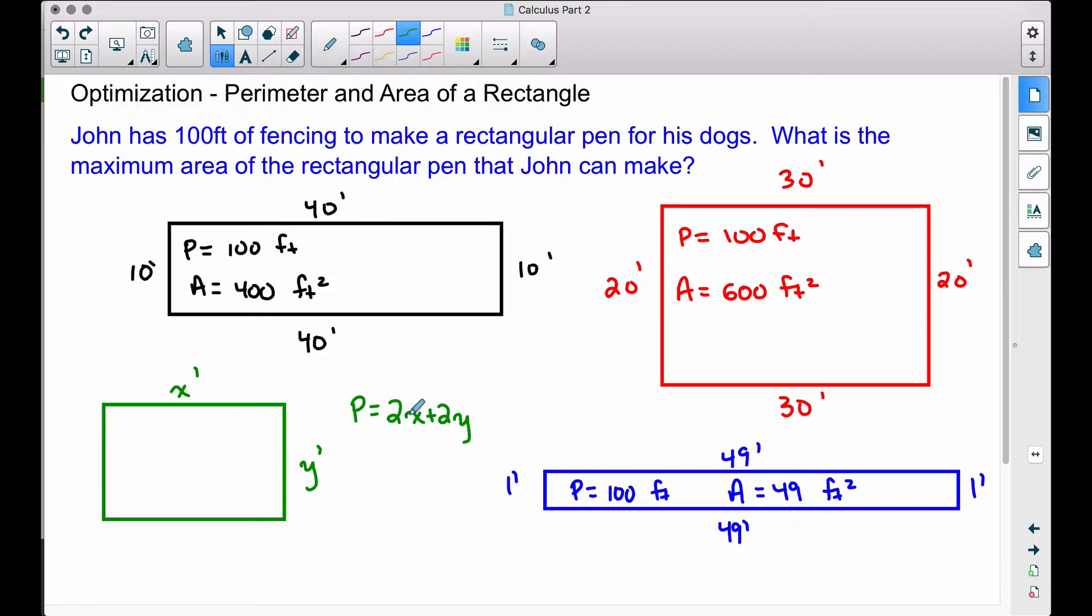However, we can be a little bit more specific with this. If we add up all four sides, we know that that's going to be equal to 100 feet because that's how much fencing John has. So this equation right here, the perimeter equation, is going to be helpful in a minute when we go to actually find the maximum area.